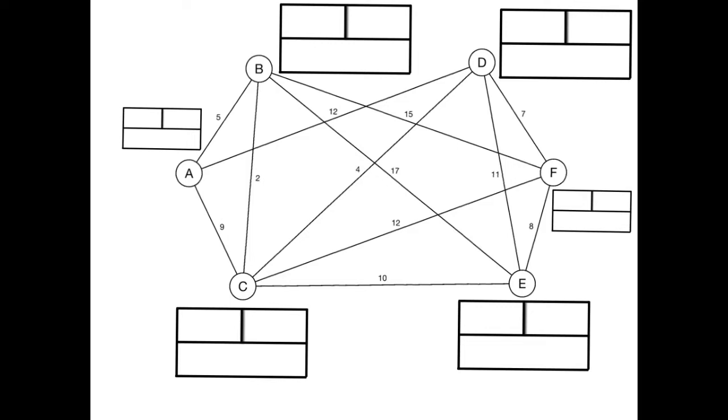Starting at A, this is node number one to be labeled and it receives a permanent label of zero, meaning it has a distance of zero from the start. We then look at each of the different nodes that we can get to from A and work out what their new temporary label is going to be.